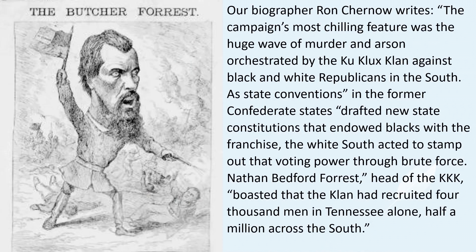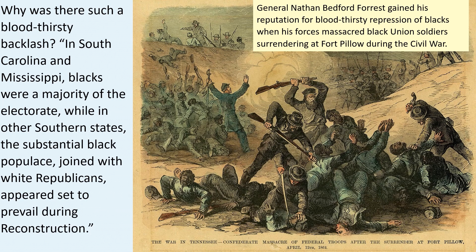Andrew Johnson ran second on the first two ballots in the Democratic Convention, but his candidacy quickly faded. Horatio Seymour, a notorious Copperhead governor, was nominated, denouncing the Emancipation Proclamation, promising to halt reconstruction and allow white governments in the former Confederate states. Our biographer Ron Chernow writes that the campaign's most chilling feature was the huge wave of murder and arson orchestrated by the Ku Klux Klan against black and white Republicans in the South. Nathan Bedford Forrest, head of the KKK, boasted that the Klan had recruited 4,000 men in Tennessee alone and half a million across the South. General Nathan Bedford Forrest gained his reputation for bloodthirsty repression of blacks when his forces massacred black Union soldiers surrendering at Fort Pillow during the Civil War.